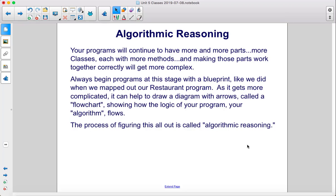Always begin programs at this stage with a blueprint, like we did when we mapped out our restaurant program. As it gets more complicated, it can help to draw a diagram with arrows called a flowchart, showing how the logic of your program, your algorithm, flows. The process of figuring this all out is called algorithmic reasoning.